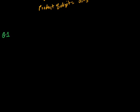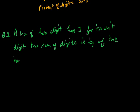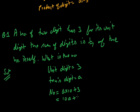A number of 2 digits has 3 for its unit digit, and the sum of the digits is 1 by 7 of the number itself. Then what is the number? It is given that the number has 2 digits and the unit digit is 3. Let's assume that the tens digit is A. So the number is tens digit A into 10 plus unit digit 3, that is 10A plus 3.